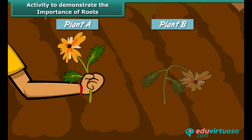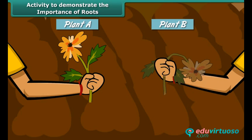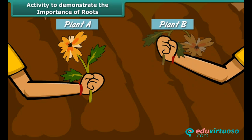Now try pulling the two plants out from the soil. Plant A is firmly attached to the soil because of its roots, so it is difficult to pull out. However, plant B, which has no roots, comes out easily. This shows that roots anchor plants firmly in the soil.